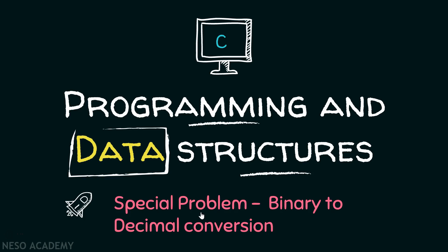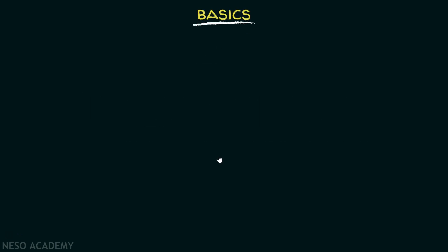In this presentation, we will consider one special problem related to binary to decimal conversion. Let's consider some basics before diving into the code. Suppose we have a number 1001, which is a binary number, and we need to convert this number to a decimal number.